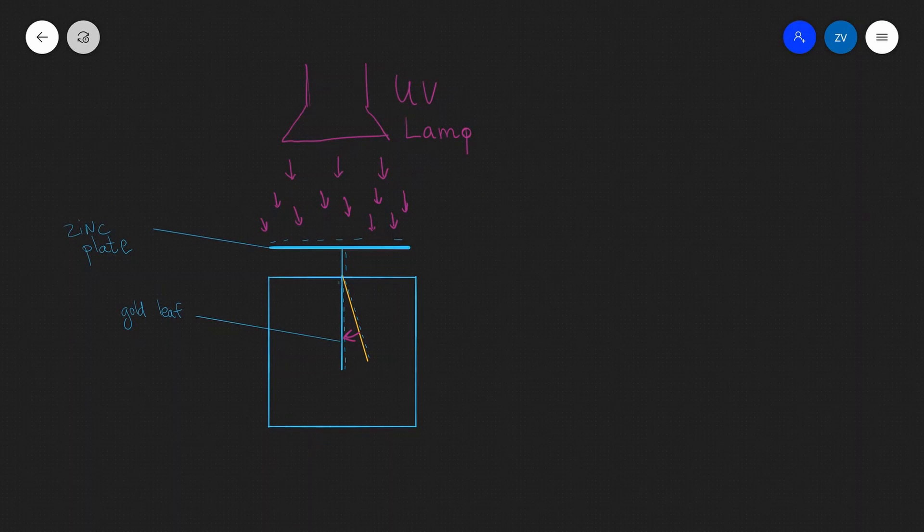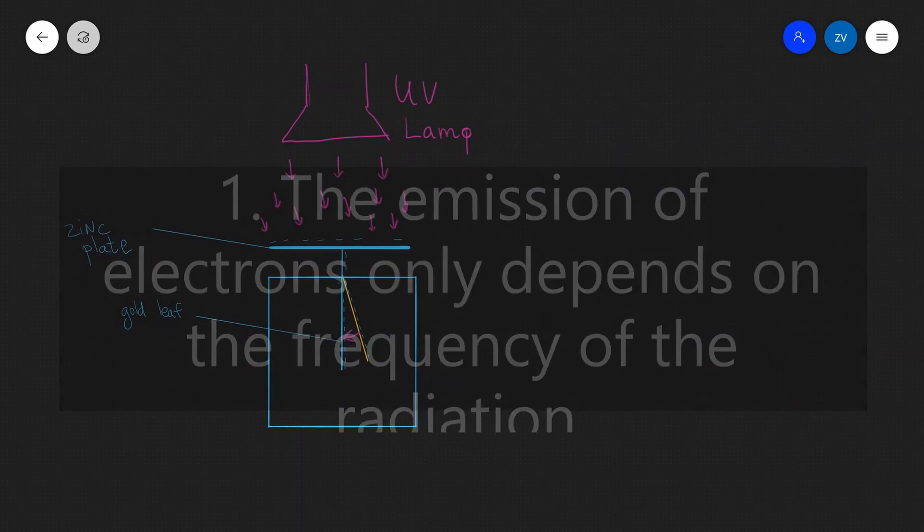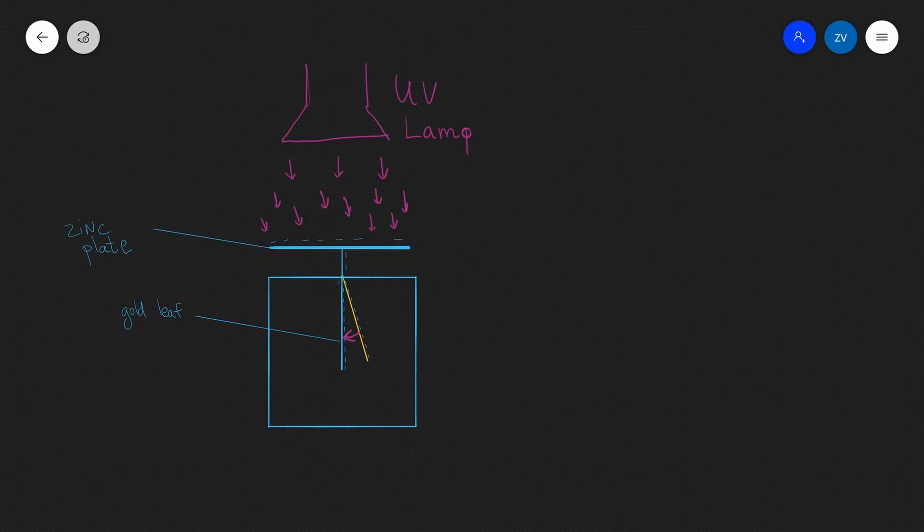So let's summarize our key findings. Number one, the emission of electrons only depends on the frequency of the light. This is because the energy of an individual photon is actually proportional to the frequency and the energy of, let's say, a visible light is below the work function of the metal. So nothing happens. If we switch to UV light, which has a higher frequency, then there will be an emission of electrons and the gold leaf will drop.